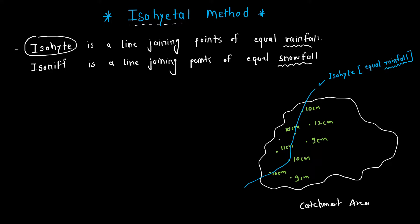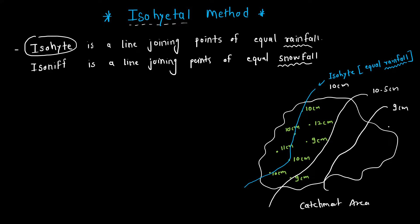So this isohyet is a 10 cm isohyet. Similarly there can be another isohyet of 10.5 cm and another of 9 cm. We will label these isohyets with precipitation values P1, P2, P3, and P4. In this case P1 is 10 cm and P2 is 10.5 cm.